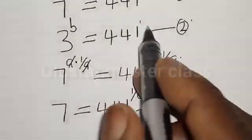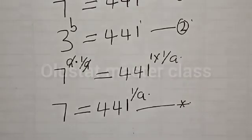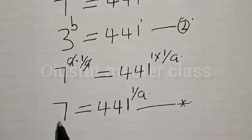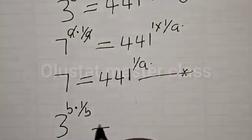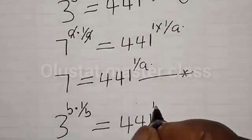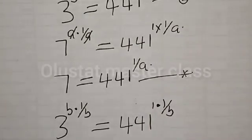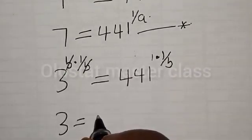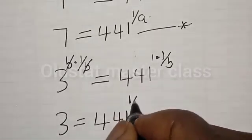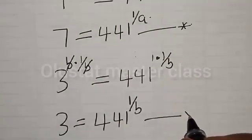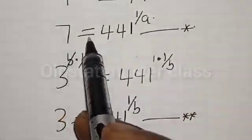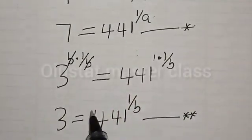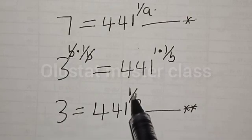Also, from equation 2, let's multiply the exponent of both sides by 1 divided by B. That is, 3 raised to power B multiplied by 1 over B is equal to 441 raised to power 1 multiplied by 1 over B. Then we have 3 is equal to 441 raised to power 1 divided by B. Let's call this equation double star.